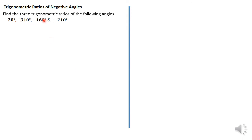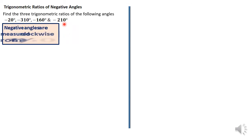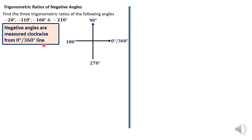Before us is a question: find the three trigonometric ratios of the following angles — all of these are negative angles. Negative angles are normally angles that are measured clockwise from the zero/360 degree line. These angles are measured in this particular direction from the zero/360 degree line. Normally we measure angles anti-clockwise, but these ones are measured clockwise, and that's why we call them negative angles.